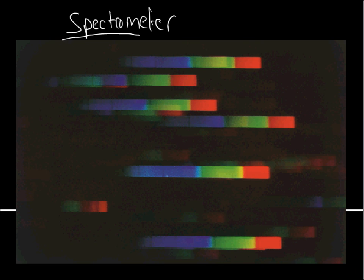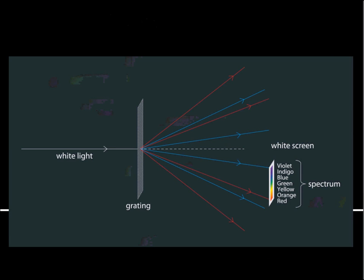But once we've collected the light, we can look at it in some detail. We have a second method for splitting up light. And in this case, what you can do is you can shine that white light through something called a diffraction grating.